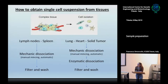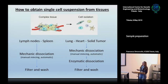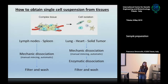What about tissue? If you have tissue and you want to obtain a single cell suspension from tissue that is, let's say, simple tissue like lymph nodes or spleen, you can go through a mechanical dissociation — that can be manual or automatic. Then you have to filter your samples through a 40–70 micrometer nylon filter, then you wash your cells and you basically obtain the single cell suspension and you are ready for the staining.